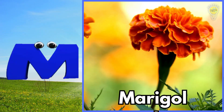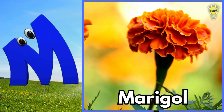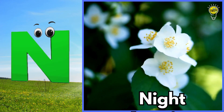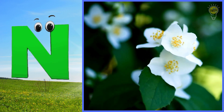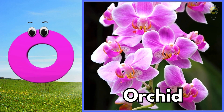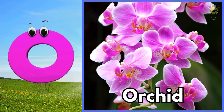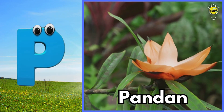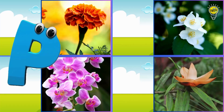M is for marigold flower, marigold flower. N is for night jasmine flower, night jasmine flower. O is for orchid flower, orchid flower. P is for pandanus flower, pandanus flower.